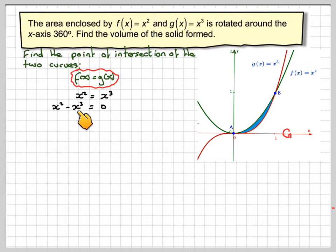We've got x² - x³ = 0. Factor out x² and we get x²(1 - x) = 0. So either x is zero from that one or x has to be equal to one. So zero and one are going to be our limits of integration.